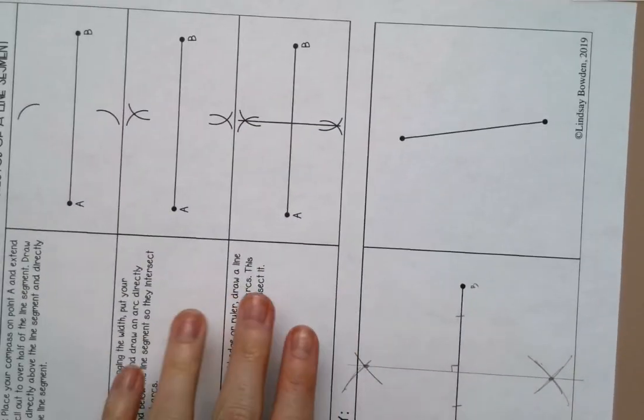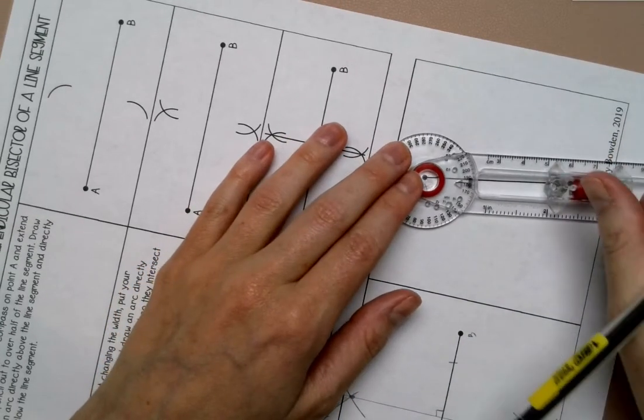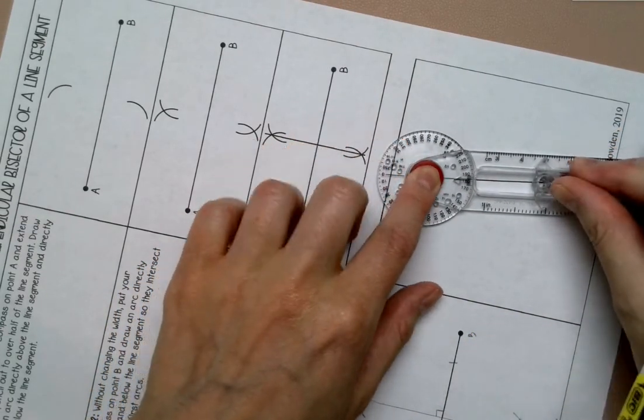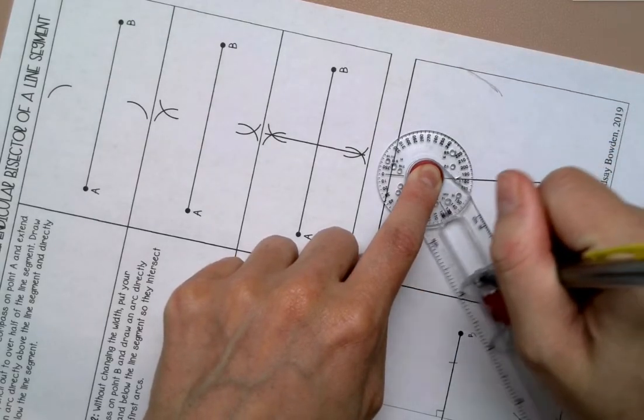Alright, so I'm going to rotate my paper here. A and B. I'm going to set my compass to over halfway. Draw an arc above and below.